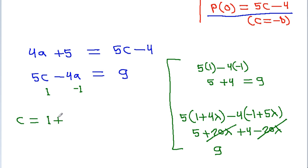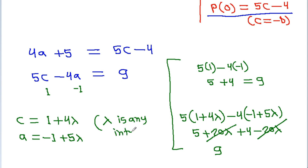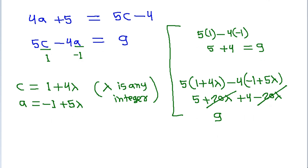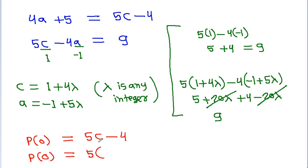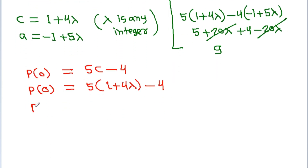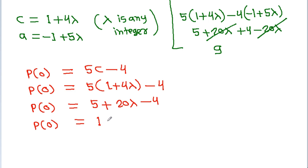So the general solution is C equals 1 plus 4λ and A equals minus 1 plus 5λ, where λ is any integer. Since P(0) equals 5C minus 4, we get P(0) equals 5(1 plus 4λ) minus 4, which equals 5 plus 20λ minus 4, giving P(0) equals 1 plus 20λ.